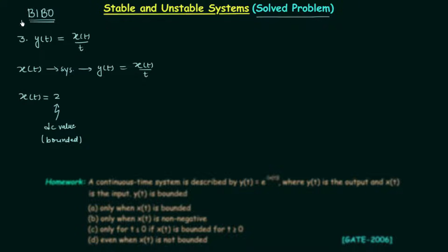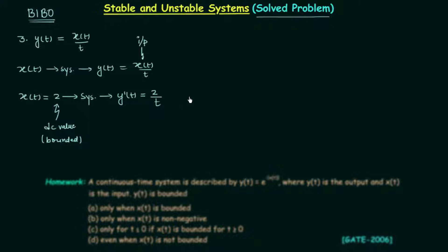We have taken a bounded input and now we will feed it to our system. The output is y(t), and you can see the functionality of the system — it is dividing the given input by t. So the input is 2, and the output will be 2/t.